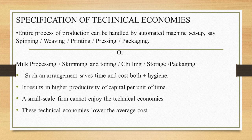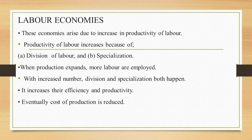A small-scale firm cannot enjoy these technical economies. These technical economies actually lower the average cost, which goes on coming down until the point of optimum, then starts rising — creating the shape of the English capital letter U, with a bottom and two upper ends. That is the shape of the long-run average cost curve.